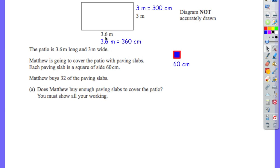Now 3.6 metres is actually 360 centimetres, because there are 100 centimetres in a metre, and 3.6 times 100 gives you 360. Likewise with 3 metres — there are 100 centimetres in a metre, so 3 metres will be 300 centimetres.